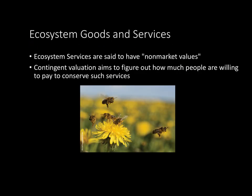Now let's look at ecosystem goods and services. Ecosystem services have non-market values — think of pollination, for instance. There isn't really a market price put on pollination because it's a natural cycle, so no one's really paying for it. Something known as contingent valuation was developed to figure out how much people are willing to pay to conserve such services, because if pollination stops, even though no one's paying for it, there will be very strong negative economic consequences.